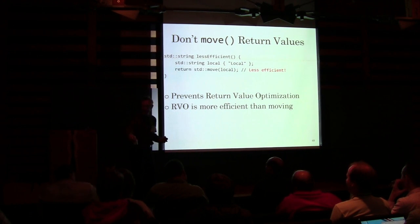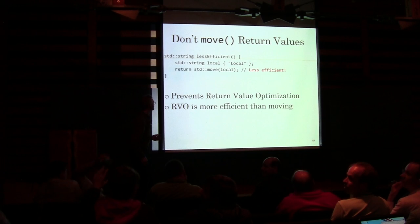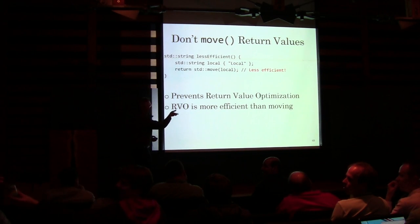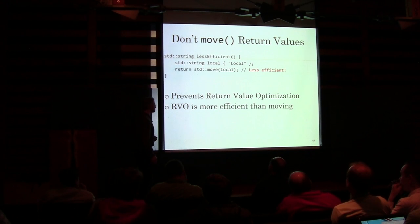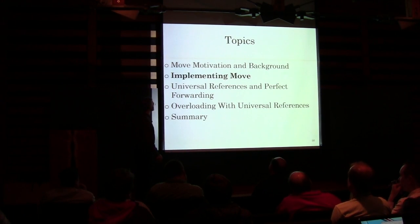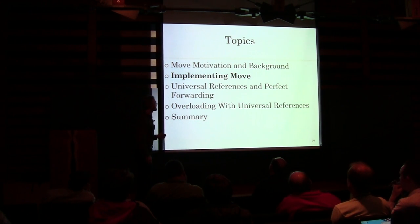We have one case where it makes sense to call std::move on the way out: if you're returning something that's constructable from a string R-value — if you're actually constructing a return value of a different type — then you want to use std::move to call the constructor taking the R-value of the string.